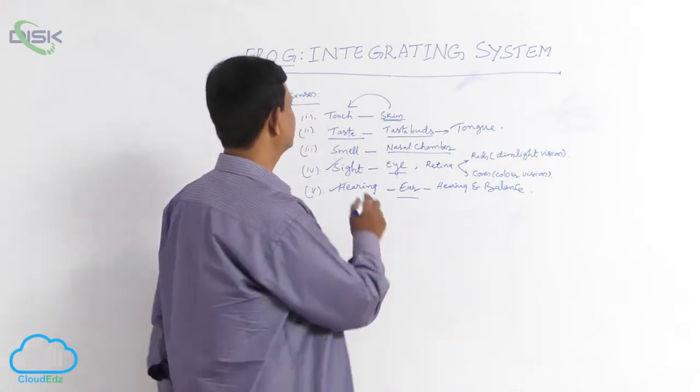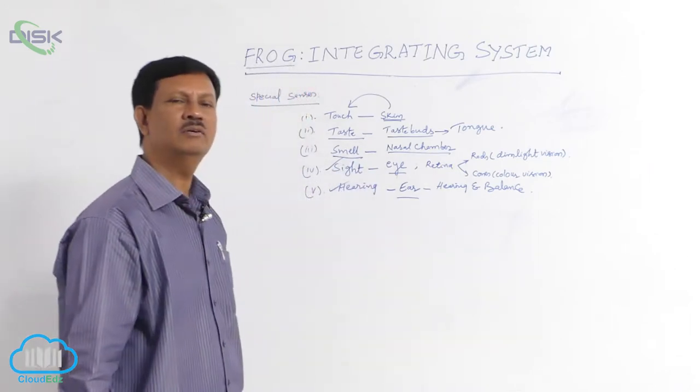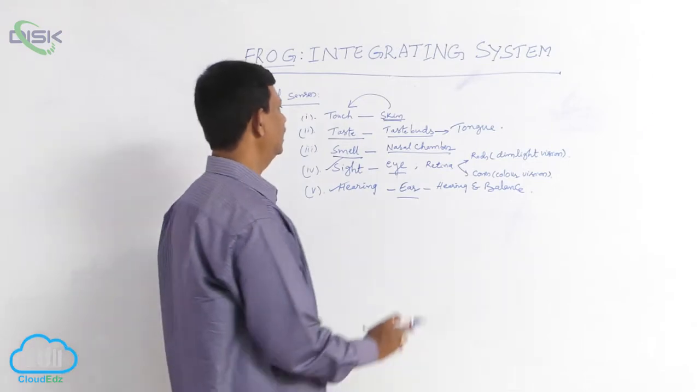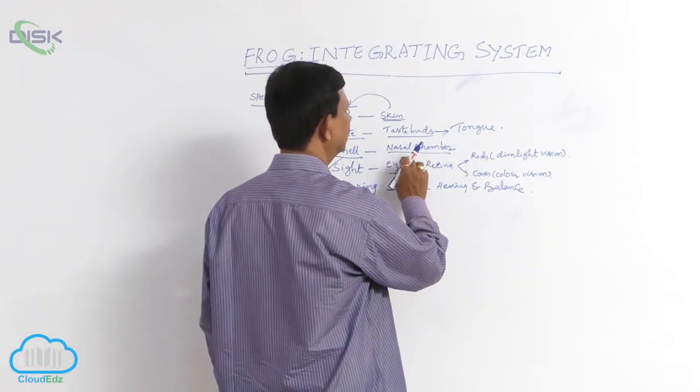Third is smell. These organs are not well developed, but the organism can recognize the smell of the surrounding and food material.